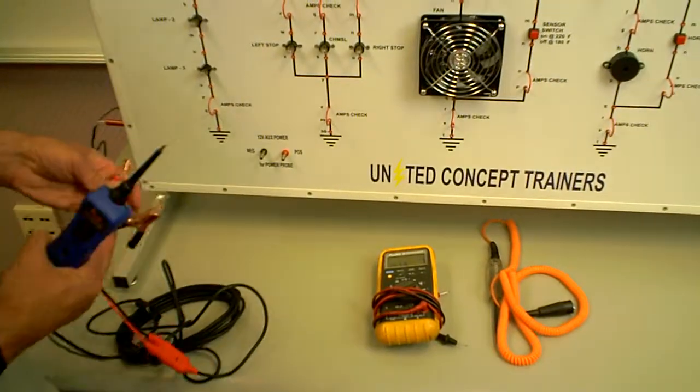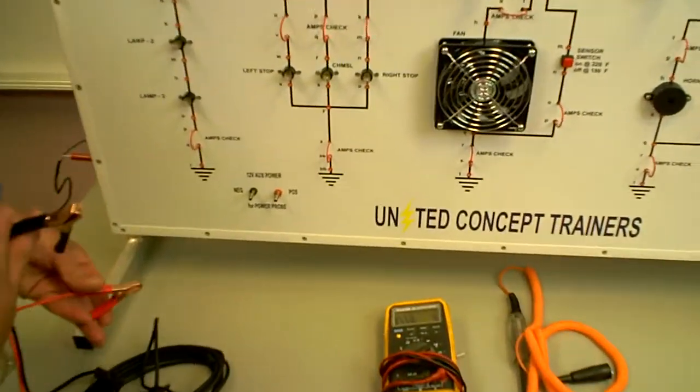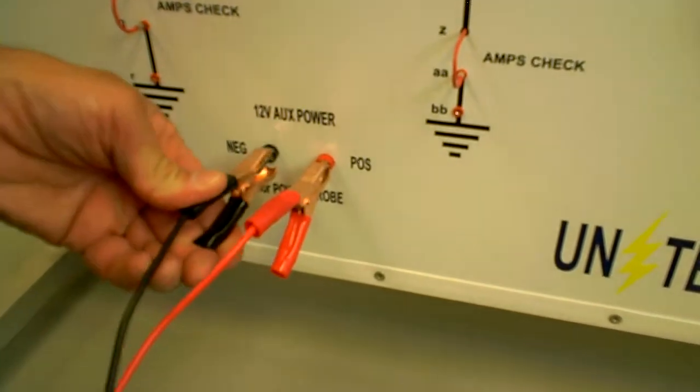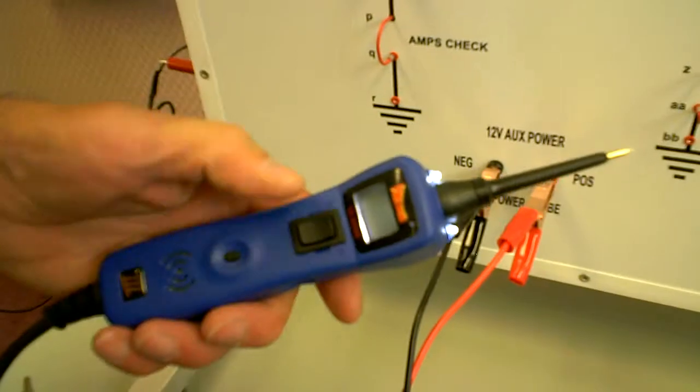What's nice about using this trainer is we can hook off the 12 volts auxiliary power in the front. There's positive and negative, just like you hook it up to the battery. I hook up positive and negative, and now the power probe comes on.